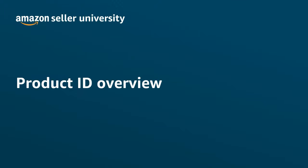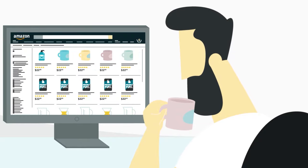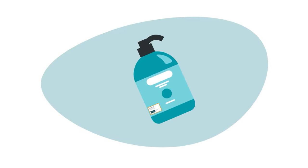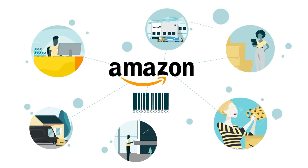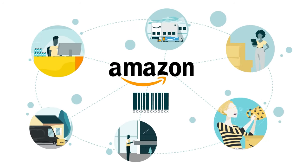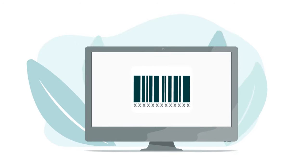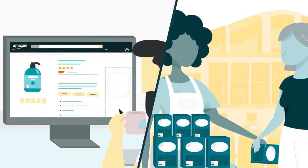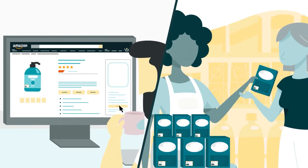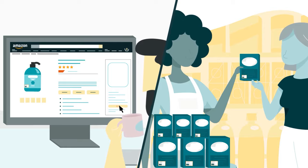Welcome to our training on the Product ID Overview. Most products sold on Amazon are required to have an industry standard product ID. Product IDs are part of a universal system called GTIN, or the Global Trade Identification Number System. This system is used by Amazon and across other marketplaces.